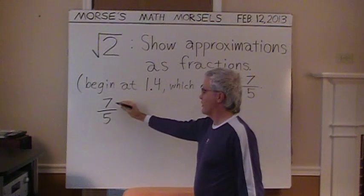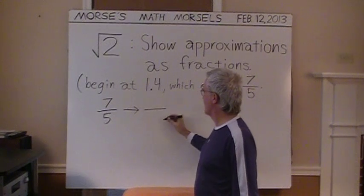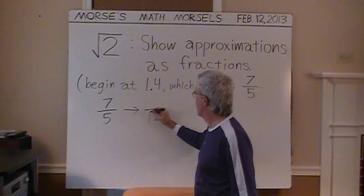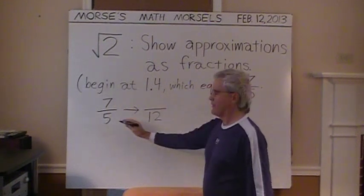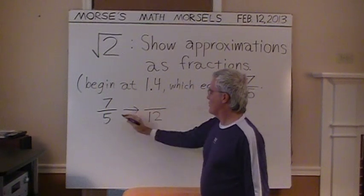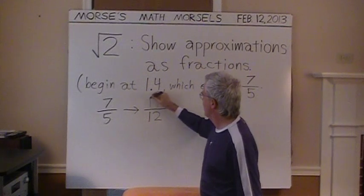That rule that he or she discovered was: take the numerator, the top number, add it to the denominator, the bottom number. Put that sum in the denominator of the new fraction. In this case, 12. Then, add the two existing denominators in the new and the old fraction. Put that in the numerator. 17.